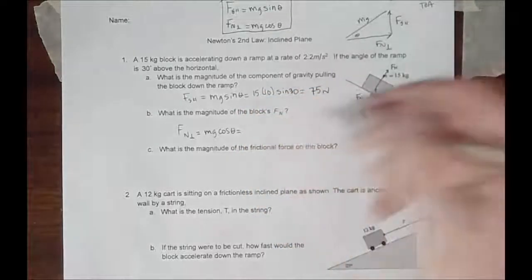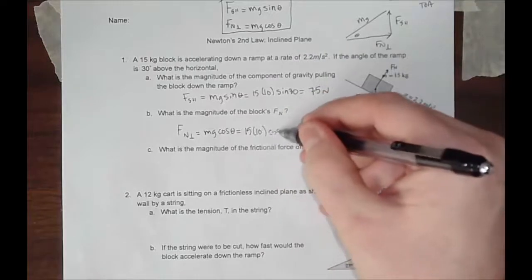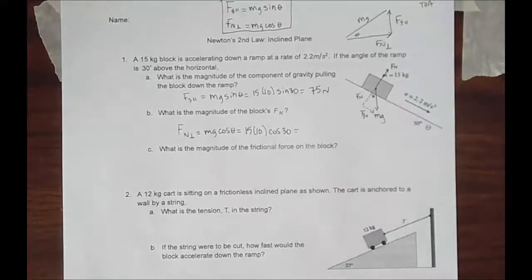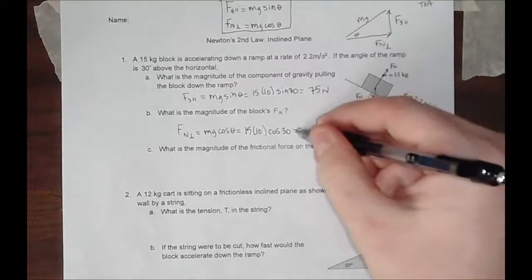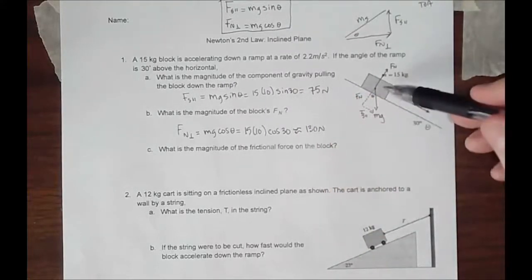The normal force or perpendicular is MG cosine of theta. So that's going to be 15 times 10 times cosine of 30. Make sure your calculator is in degrees when you do this. And I get approximately 130 newtons.